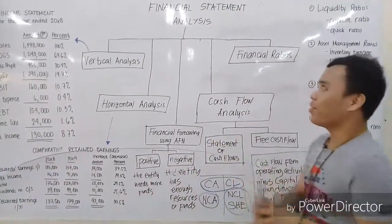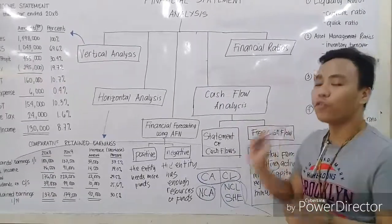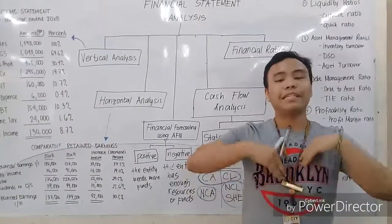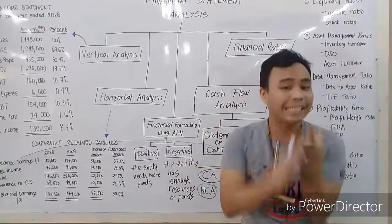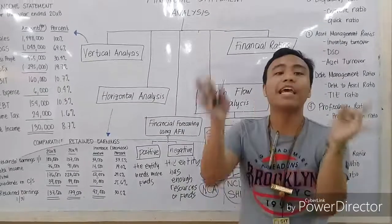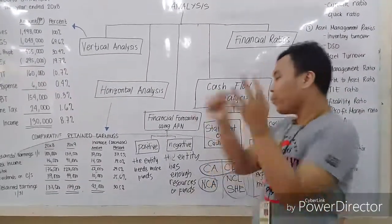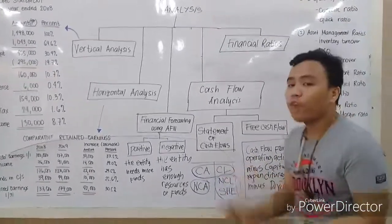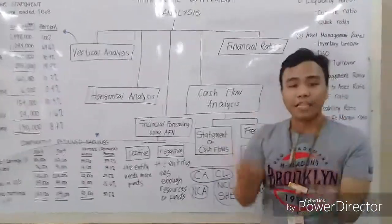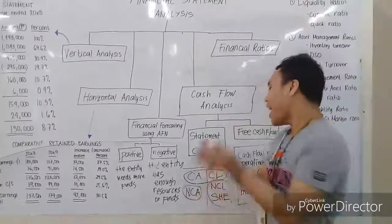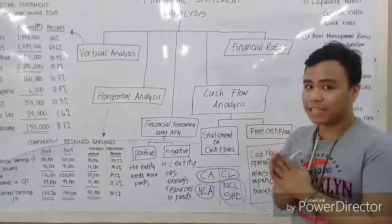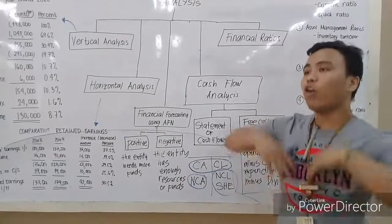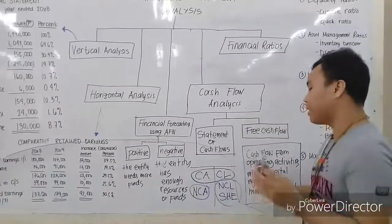Another method in financial statement analysis is cash flow analysis. The statement of cash flows shows the details of cash inflows and cash outflows. It involves three sections: operating activities, investing activities, and financing activities. Operating activities relate to transactions in current assets and current liabilities.